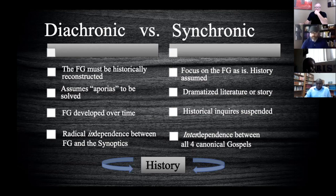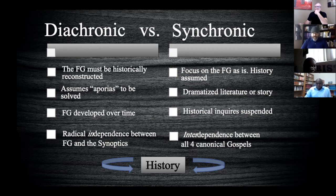Diachronic approaches have generally assumed a radical independence between John and the synoptic tradition — Matthew, Mark, and Luke — those three Gospels believed to be more historically trustworthy than what John reports. Synchronic approaches, by contrast, generally allow more interdependence, viewing all four canonical Gospels as purposefully overlapping with one another, with John deepening the theological significance of historical events contained in the synoptics.